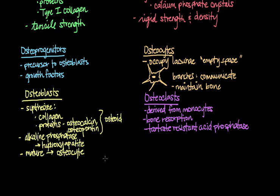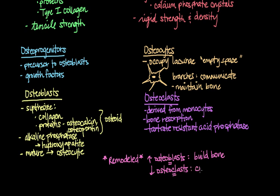And an easy way to keep this straight is to think that osteoblasts - the B in blasts is for building bone - and then osteoclasts - the C in osteoclasts is for crashing bone down. So osteoblasts build up bone, osteoclasts break it back down again.